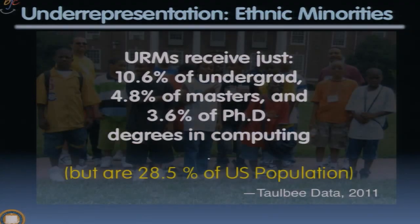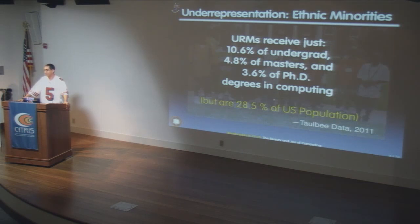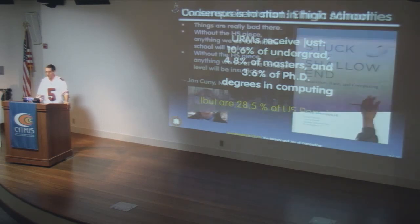For underrepresented minorities, URMs are 28.5% of the population, yet receive only 10% of undergraduate CS degrees, about 5% of master's degrees, and 3.5% of PhDs. This is what's called the dwindling pipeline. If you look at who's getting PhDs, it does not reflect the diversity of America.